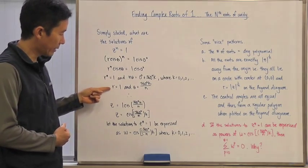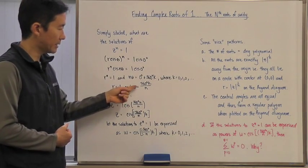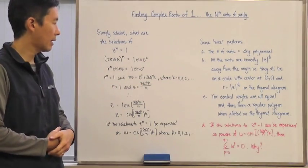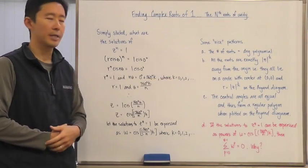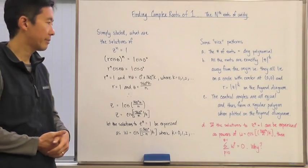Going through the whole process, we come up with r is equal to 1 and θ is equal to 360 degrees times k divided by n. And for the sake of convenience, let's just say that k is going to be equal to 0, 1, 2, etc., for all the positive integers.